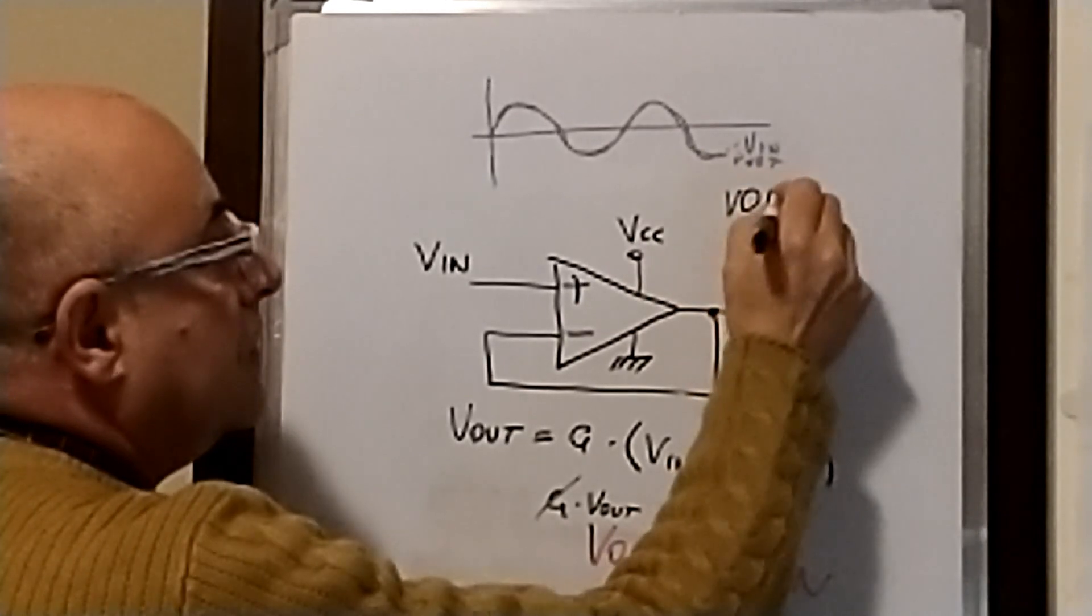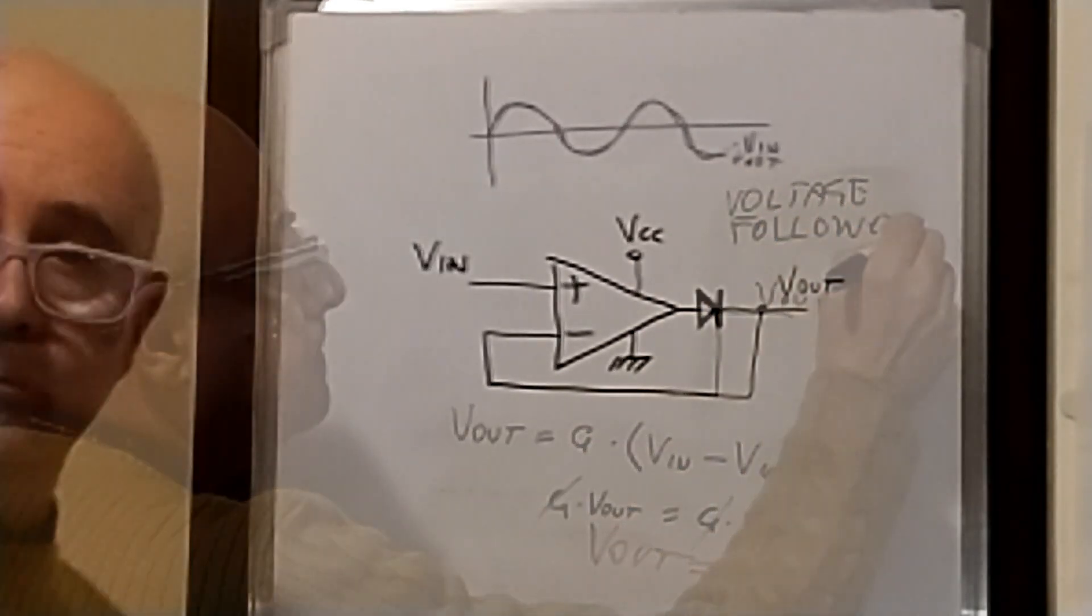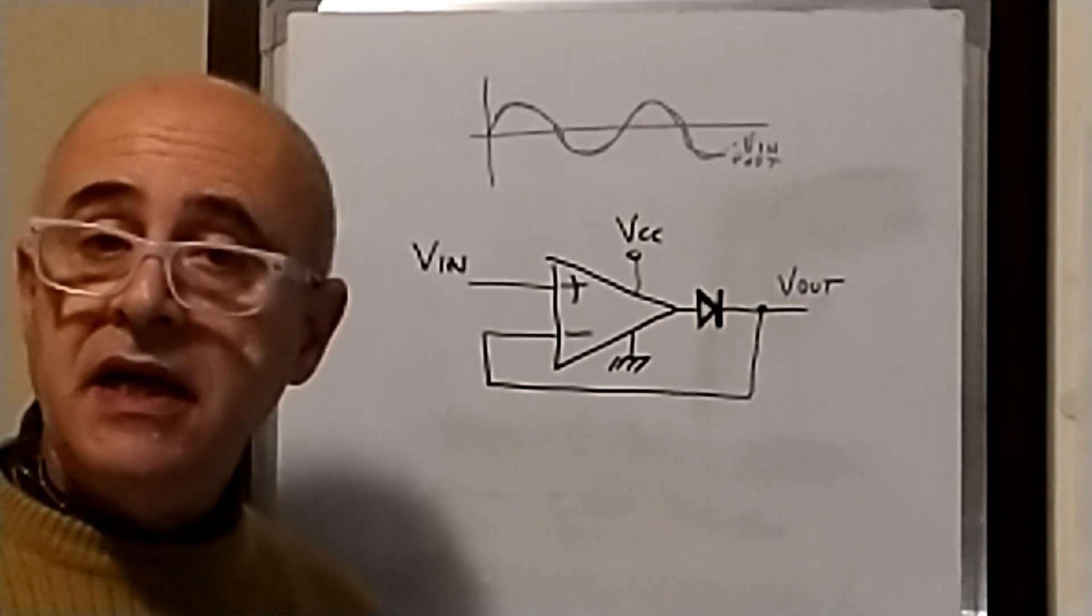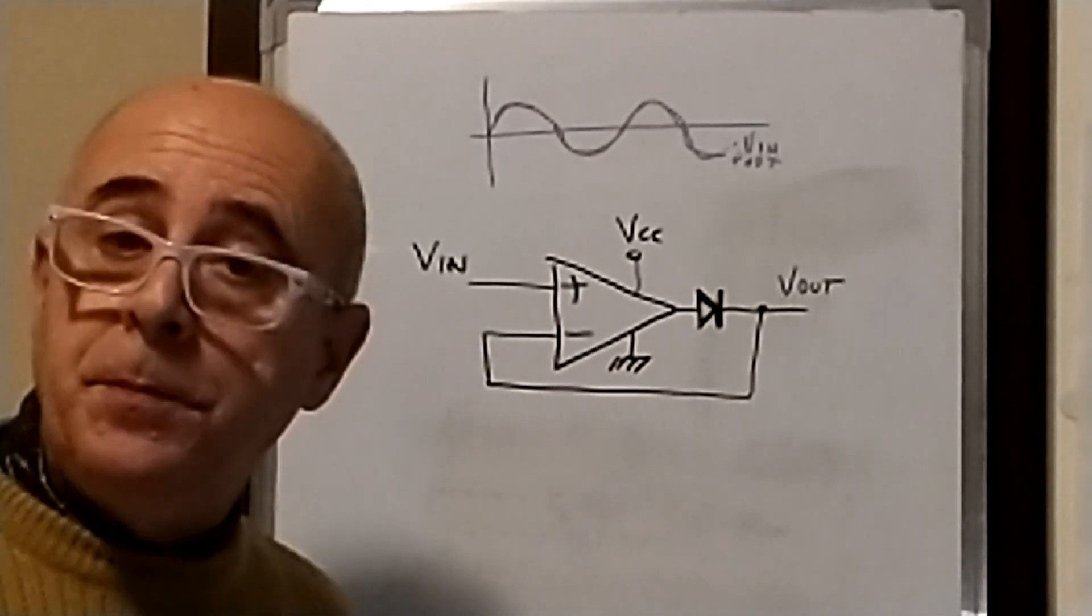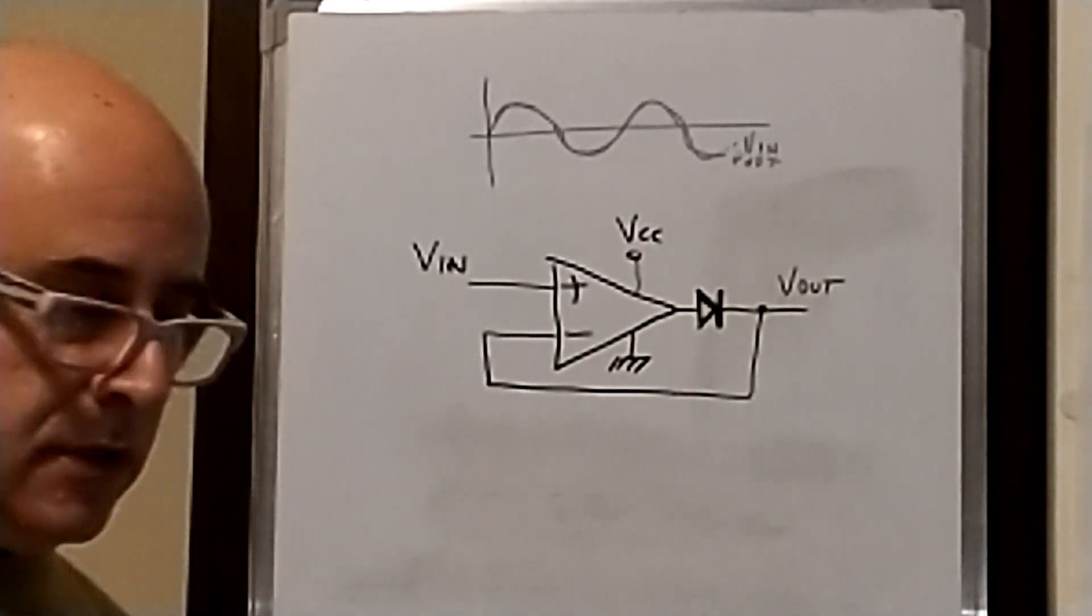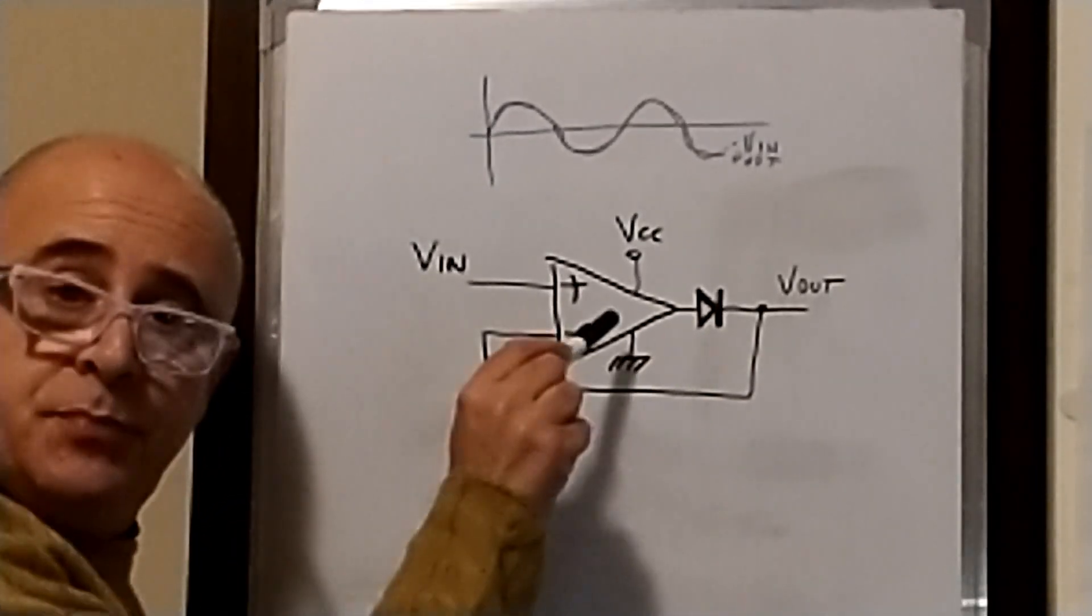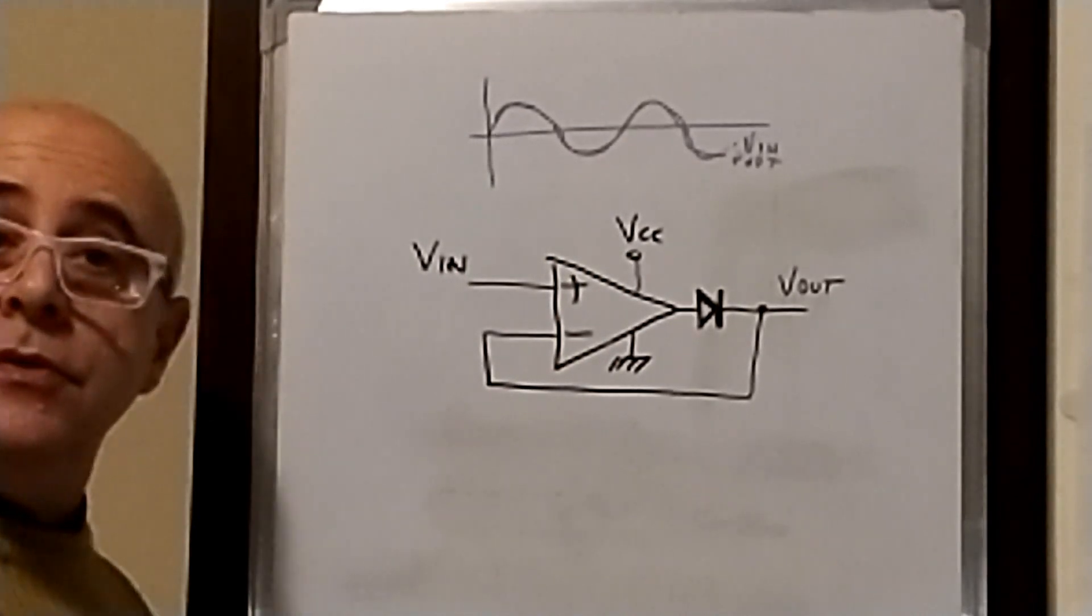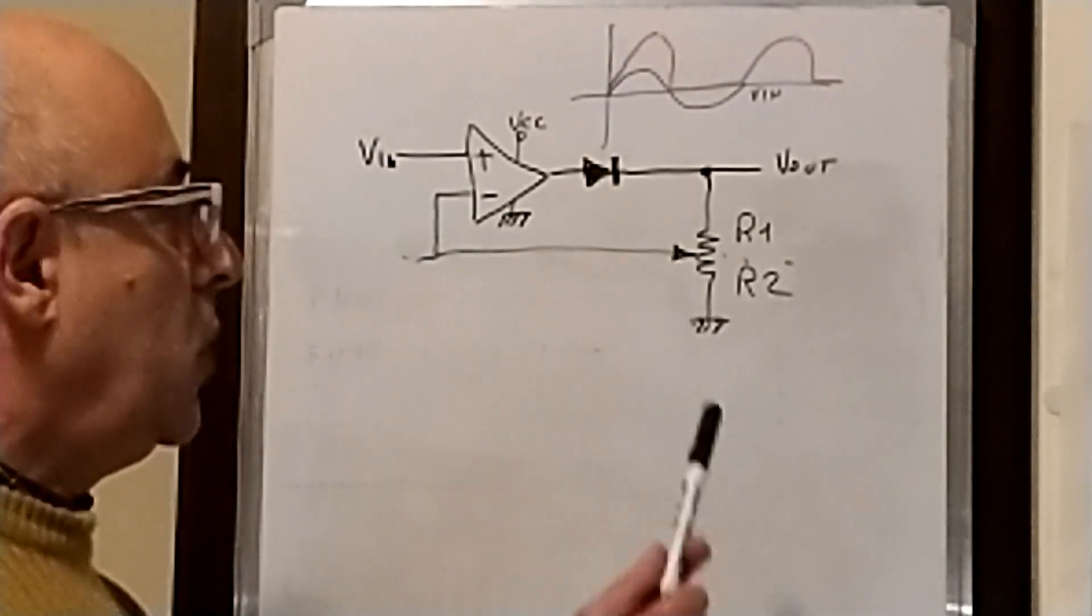Voltage follower. First modification: I inserted a diode here. As we know, the diode has 0.7 volt for silicon diode of drop between its anode and cathode. But it doesn't matter, because the negative input of the operational amplifier is always referred to Vout. So this mechanism still works.